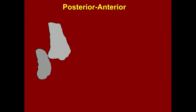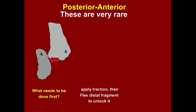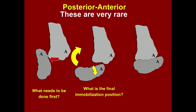This is a rare injury — the distal fragment is posterior. What do you have to do? You have to unlock it: first apply traction, then flex the distal fragment to unlock it. Then you can immobilize in extension. This is very similar to a flexion-type supracondylar fracture.